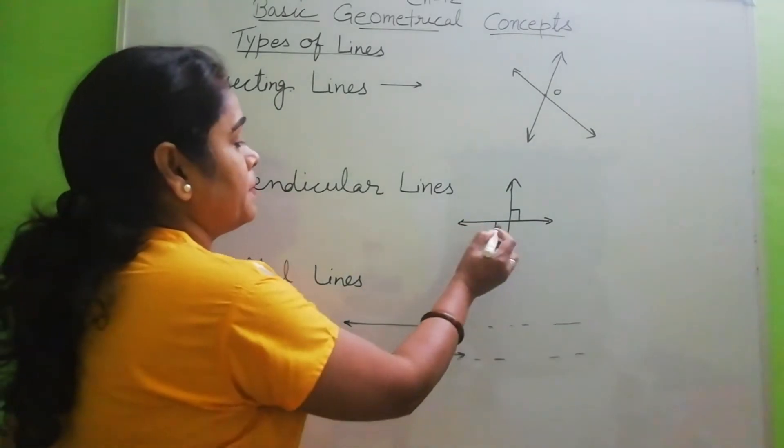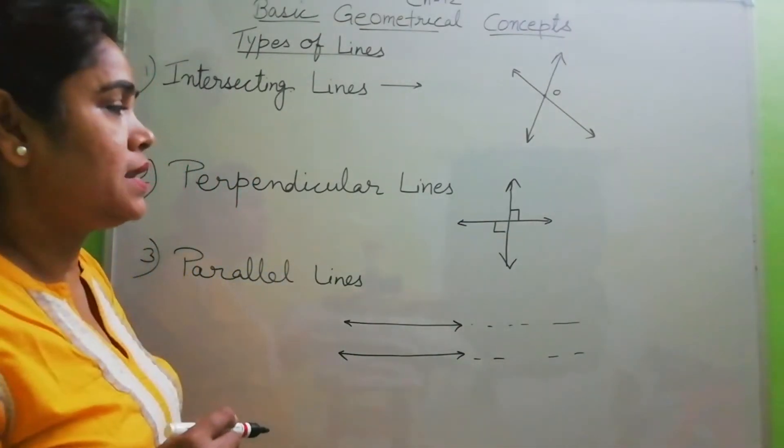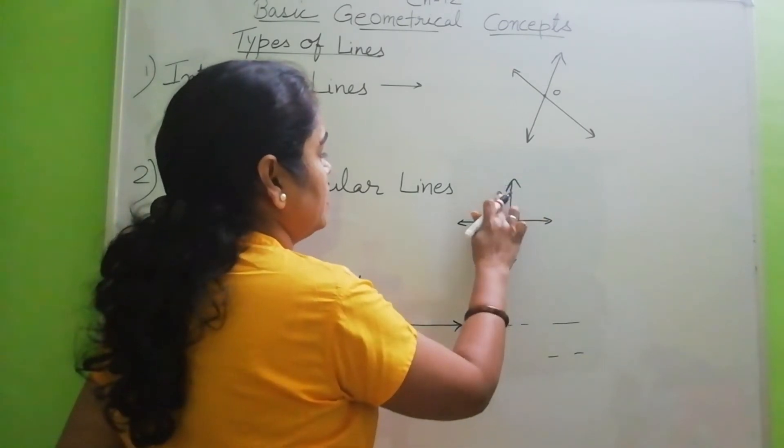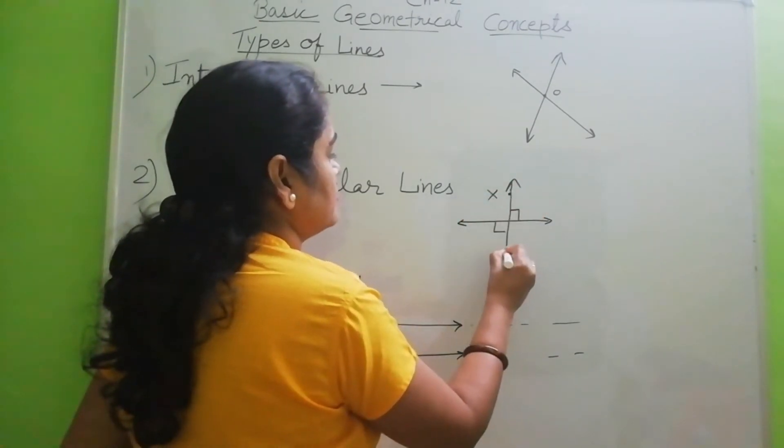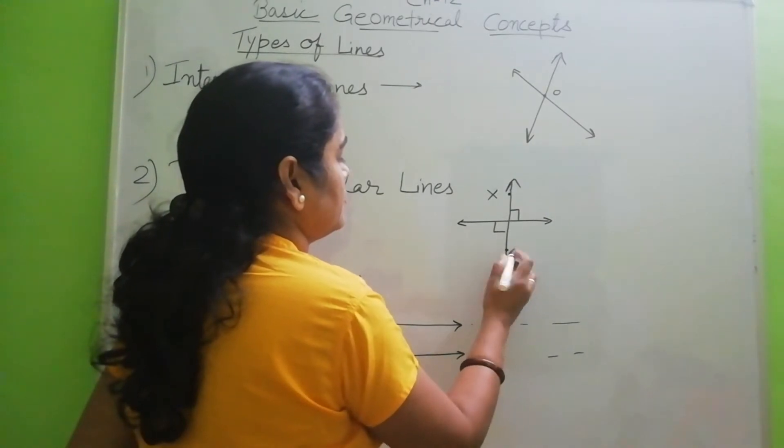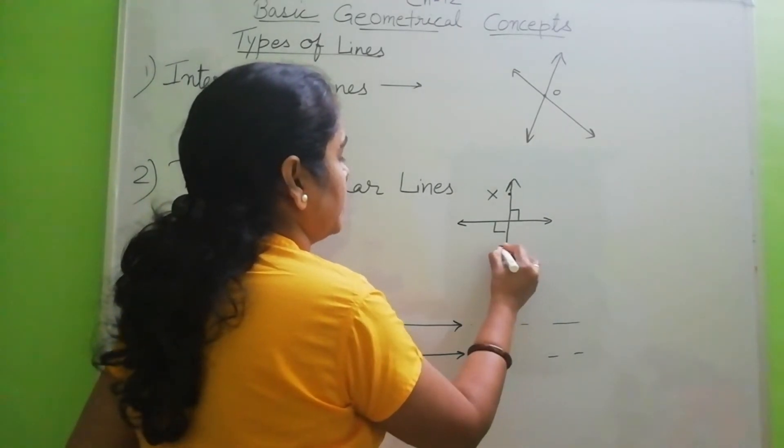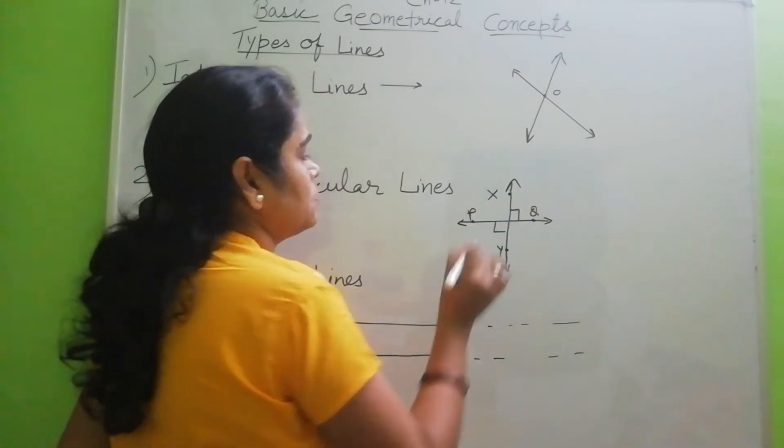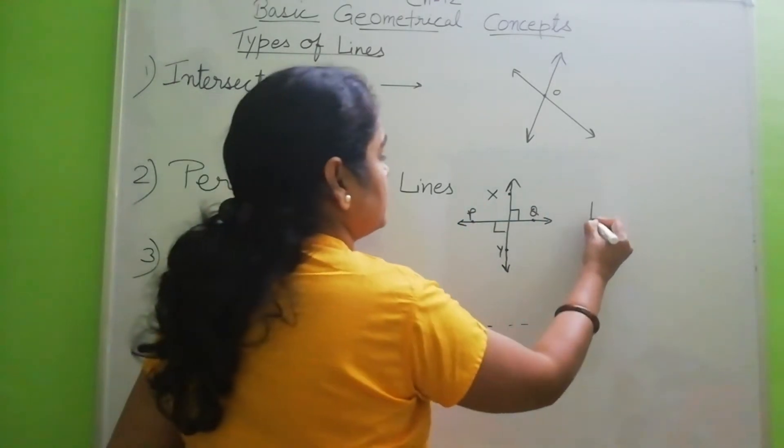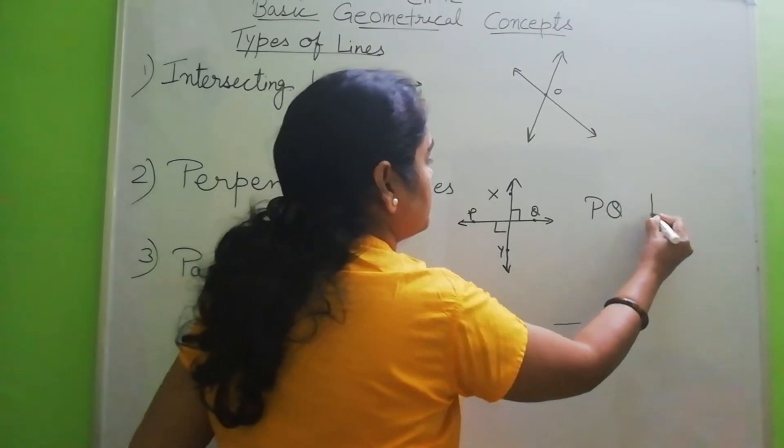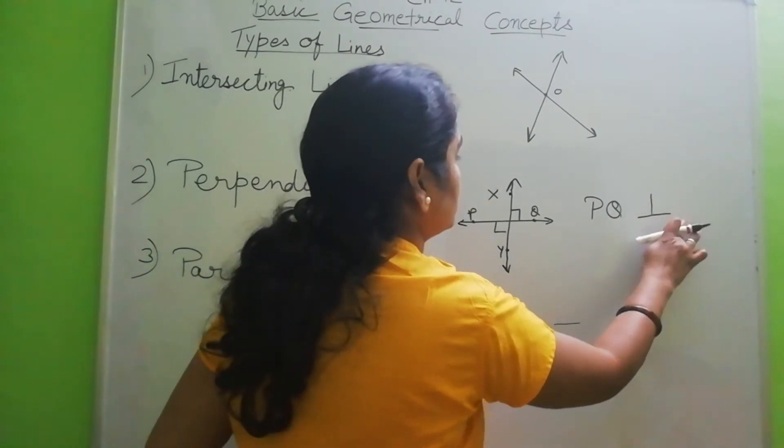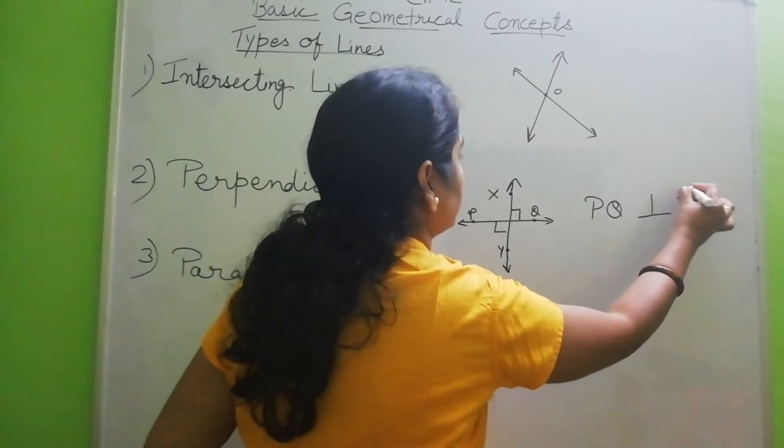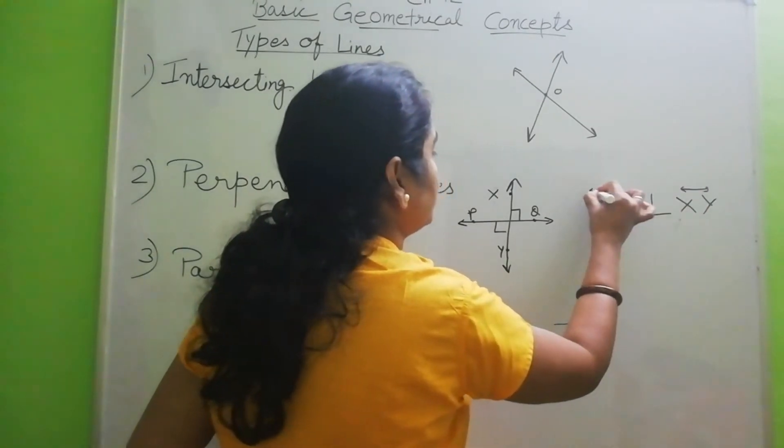Because in perpendicular line, we denote the line. Suppose the name of this line is, here I can write X, Y, P, Q. So we will denote this as P, Q is perpendicular to X, Y. Line naming you know, I have taught you.